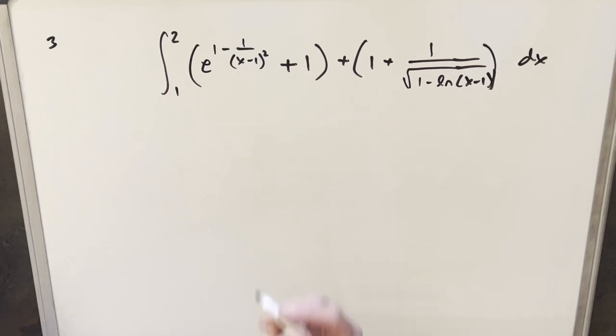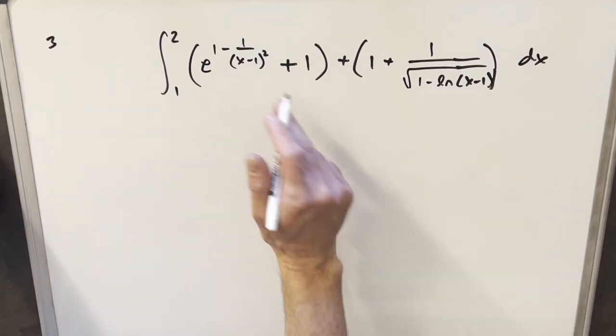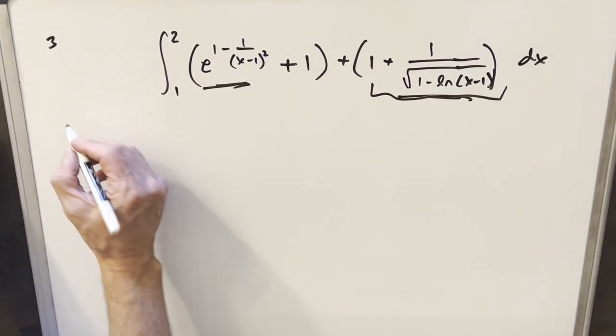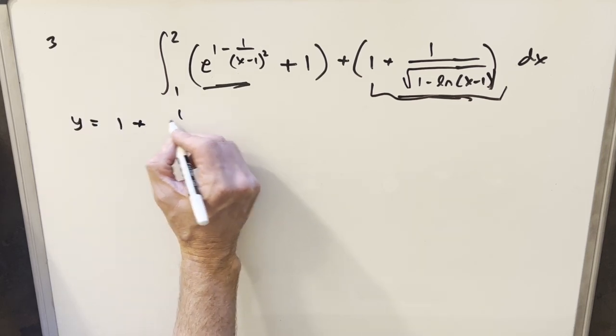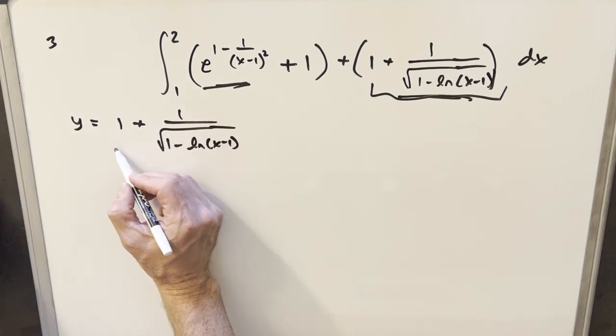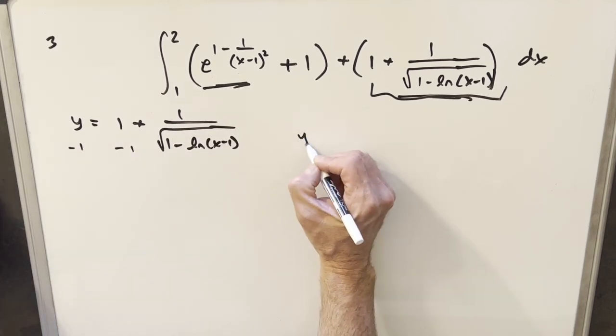Okay, so to get started with this, what I did was I wanted to find the relationship between these two things somehow. I took this whole chunk right here, and I set this equal to y. So I wrote it as y equals one plus this whole thing. And then I just subtracted one on both sides.